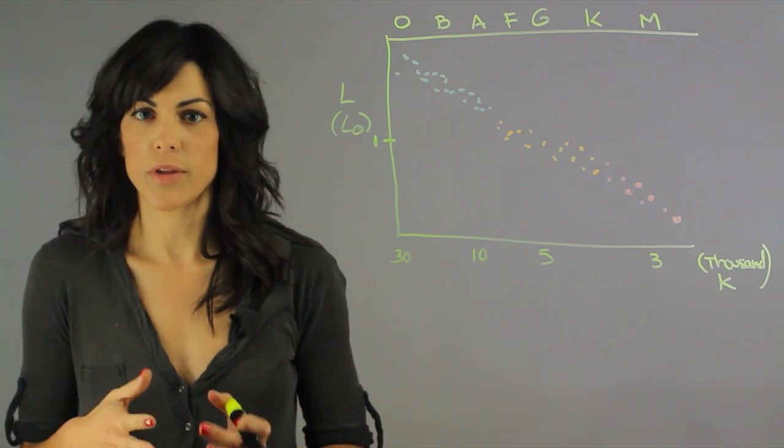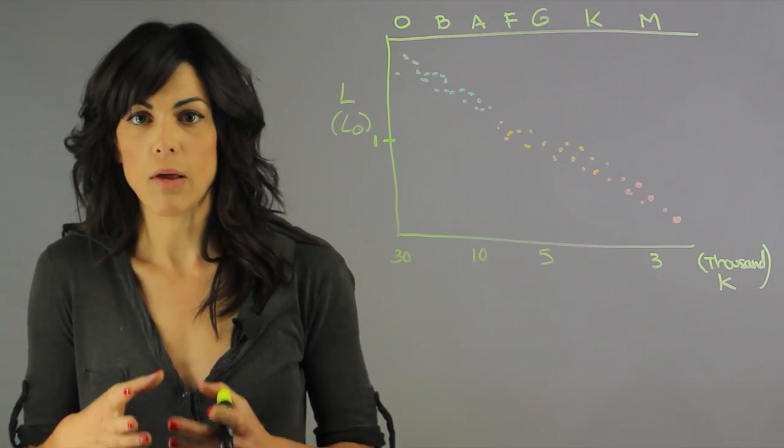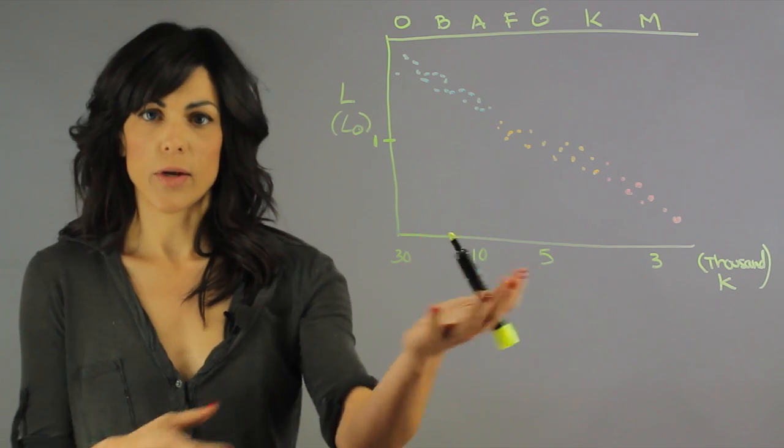One of the most important things in astronomy that you would use a lot is the HR diagram. And this is kind of what it looks like.